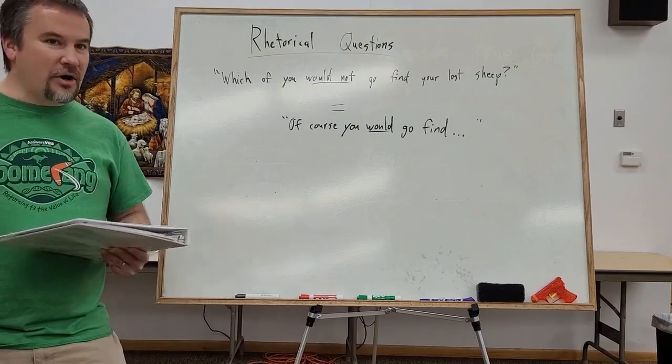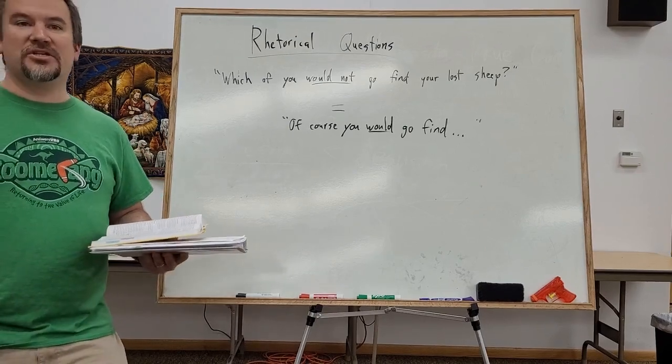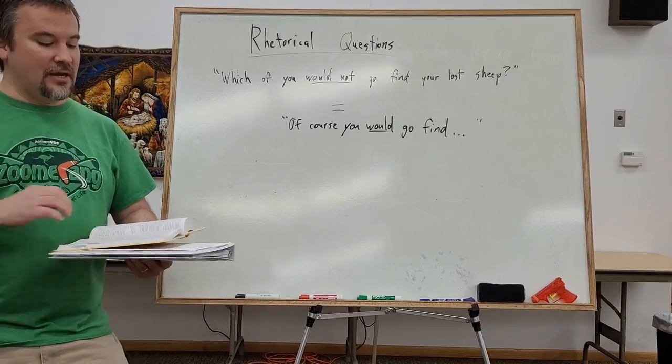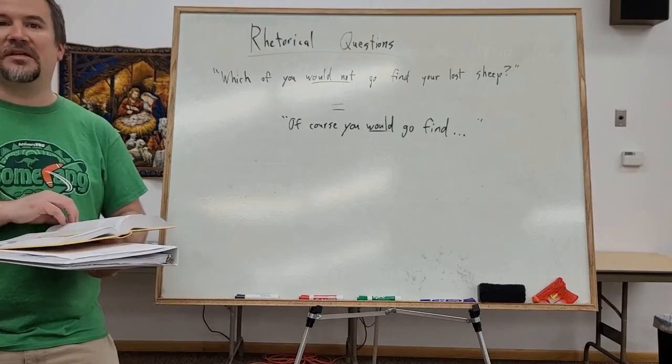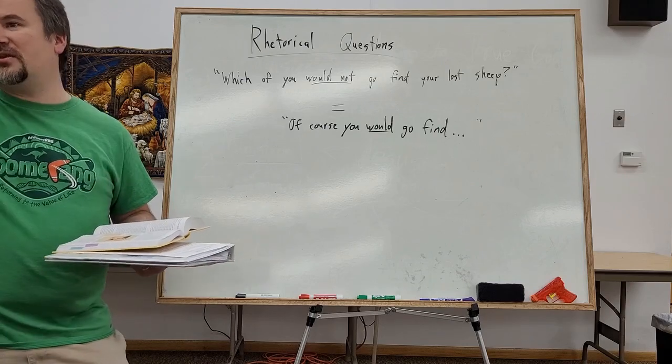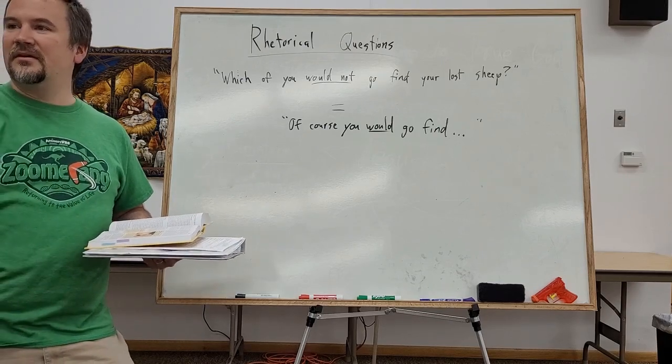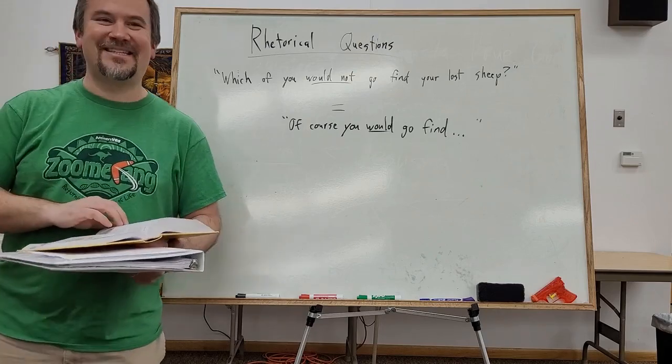The next one is Mark chapter 2, verses 1 through 12. That's the story where Jesus is in a very crowded house and there's a poor guy who's paralyzed, whose buddies want to get him to Jesus to be healed, but they couldn't get close to him. So what do they do? Who remembers? What do they do? They cut a hole in the roof. They cut a hole in the roof. Yeah. Isn't that something?